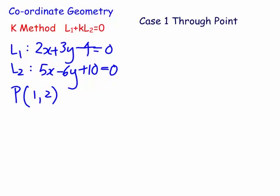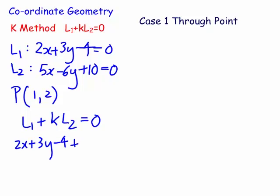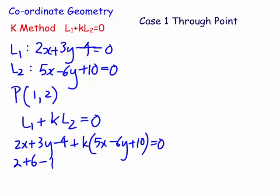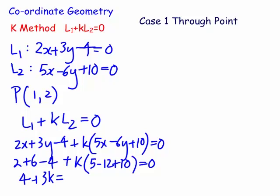The idea is: we write line 1 plus K times line 2 equals zero, and all we do is substitute the point x and y in to find the value of K. So it'll be 2x plus 3y minus 4 plus K lots of 5x minus 6y plus 10 equals zero. Subbing in x equals 1 and y equals 2, we get 2 plus 6 minus 4 plus K lots of 5 minus 12 plus 10 equals zero, giving us 4 plus 3K equals zero.